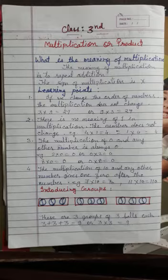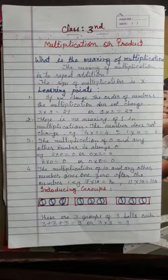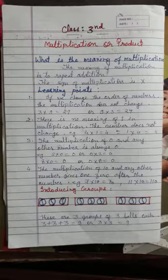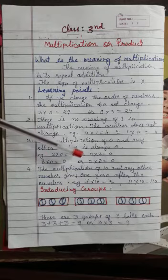The multiplication of 0 and any other number is always 0. If you multiply any digit by 0, the answer will be 0. 0 times anything is 0.